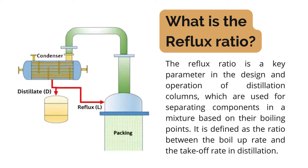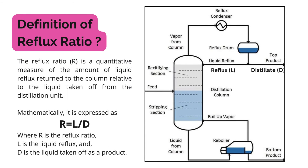Now let's dive deeper into the definition of reflux ratio. The reflux ratio in distillation is the ratio of the liquid returned to the distillation column — known as reflux — to the liquid taken off from the distillation unit. It is a key parameter in the design and operation of distillation columns. Mathematically, it is expressed as R = L / D, where R is the reflux ratio, L is the liquid reflux returned to the column, and D is the distillate taken out as product.